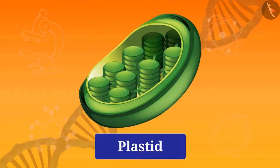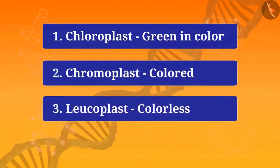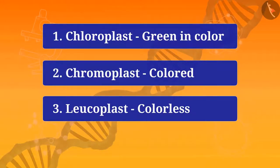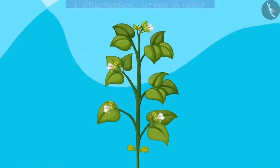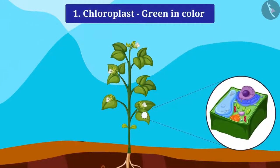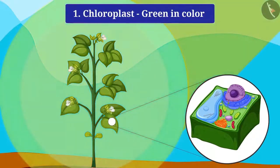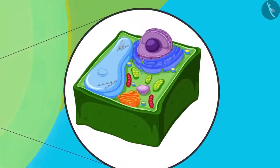The next cell organelle is plastids, which are present only in plant cells. There are three types of plastids: chloroplast, chromoplast, and leucoplast. Chloroplast is green in color, chromoplast is colored, and leucoplast is colorless. Chloroplast contains a green pigment called chlorophyll, which gives green color to plants. It also helps in photosynthesis. It is a double-membrane cell organelle whose inner structure consists of layers of membranes called thylakoids, located in a fluid called stroma.